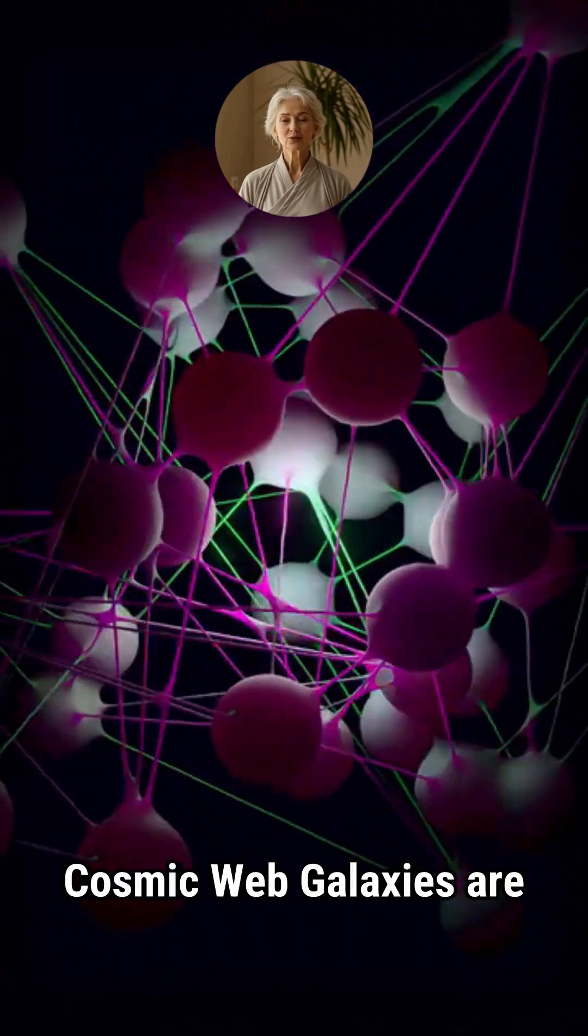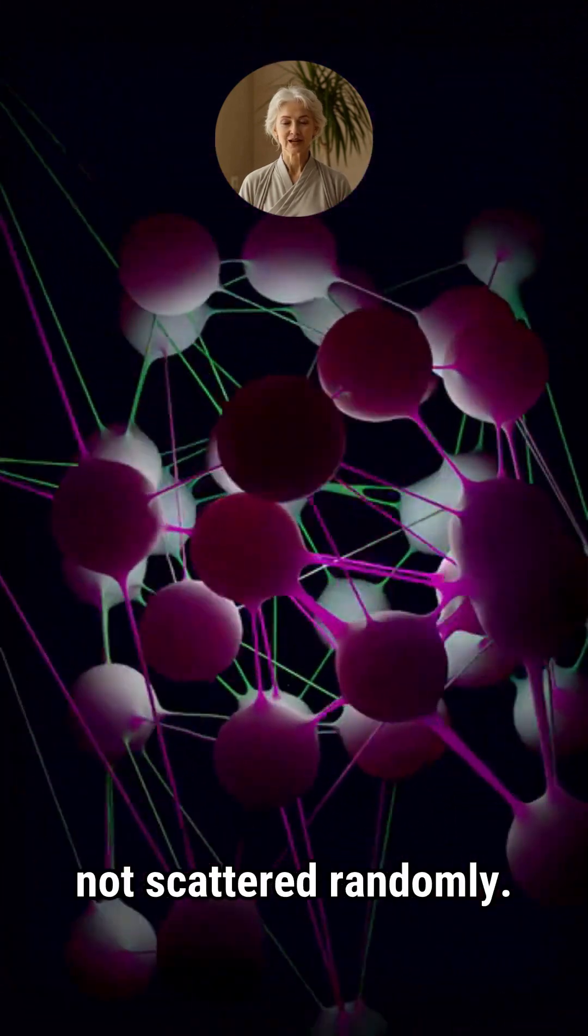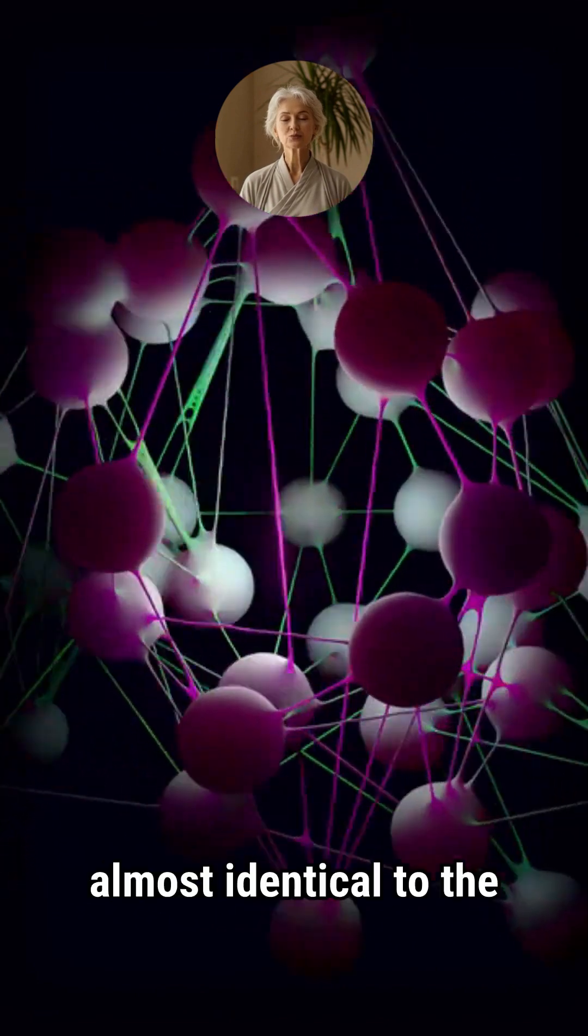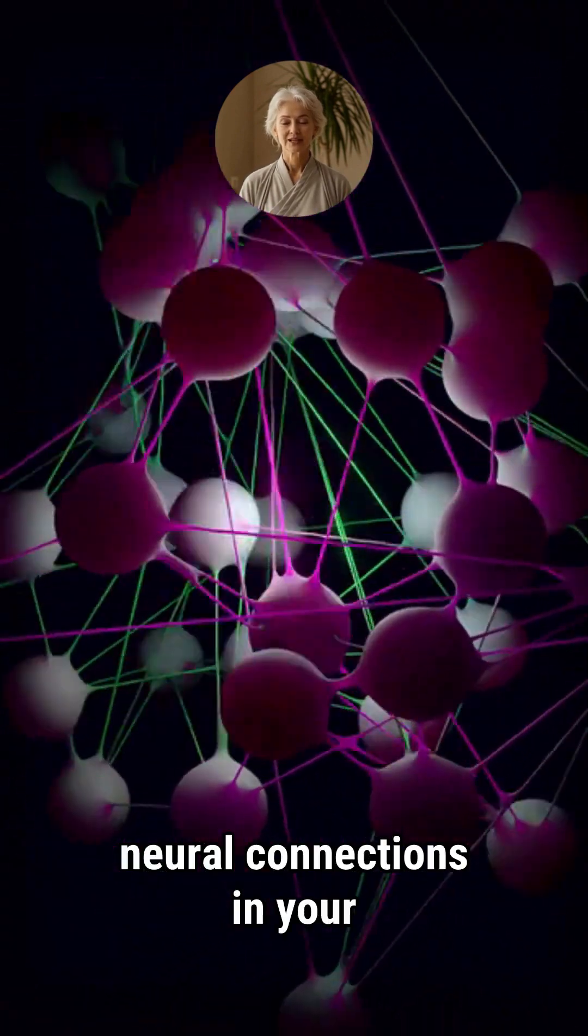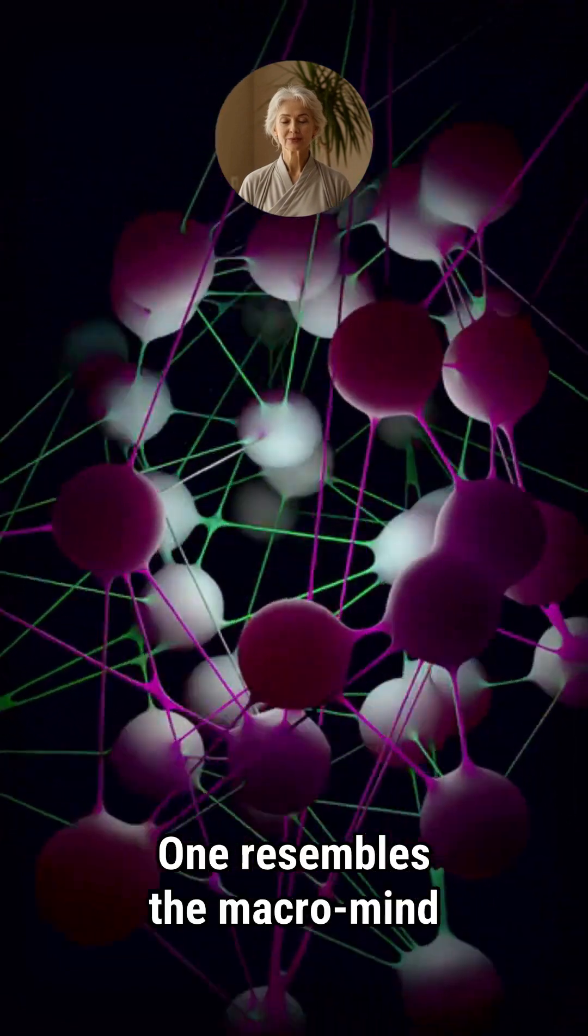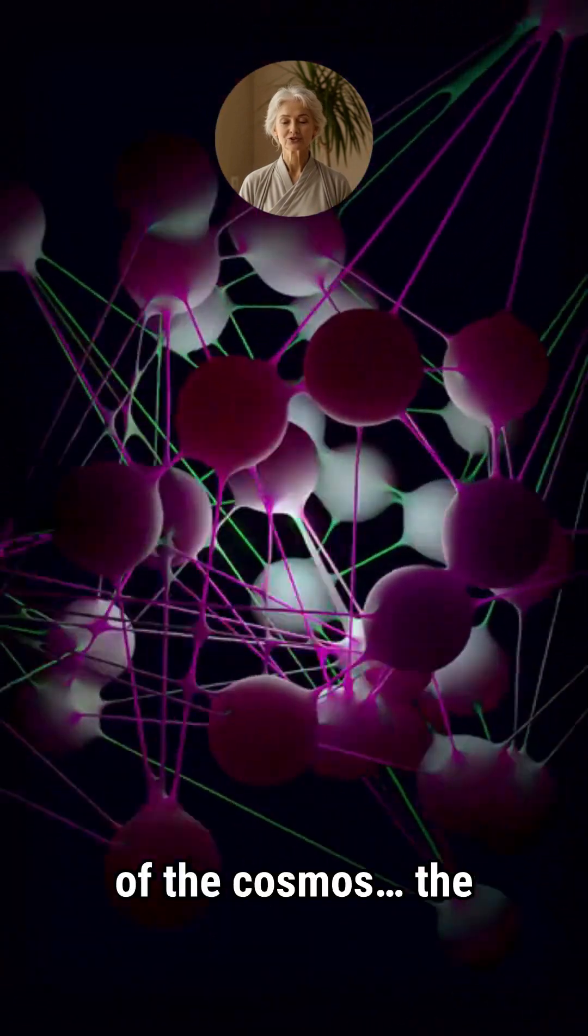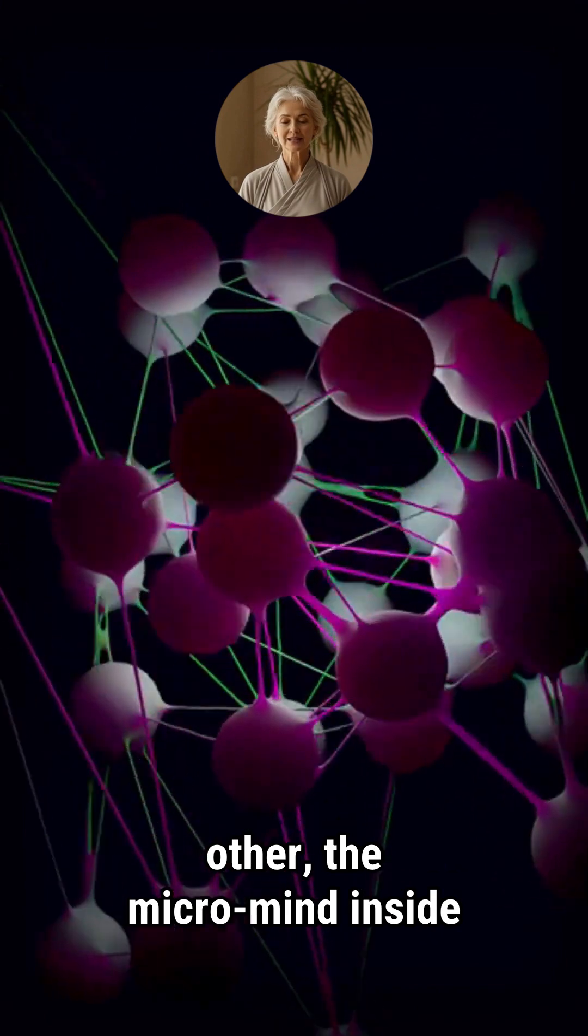Example 1. The cosmic web galaxies are not scattered randomly. They form a network almost identical to the neural connections in your brain. One resembles the macromind of the cosmos, the other the micromind inside you.